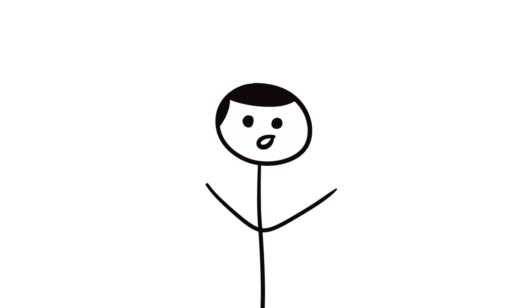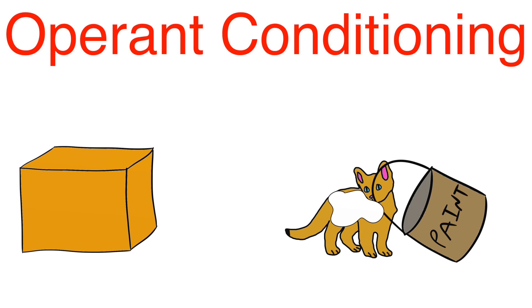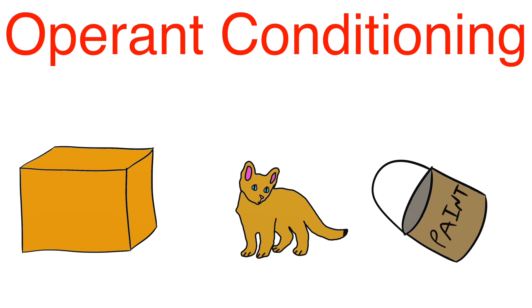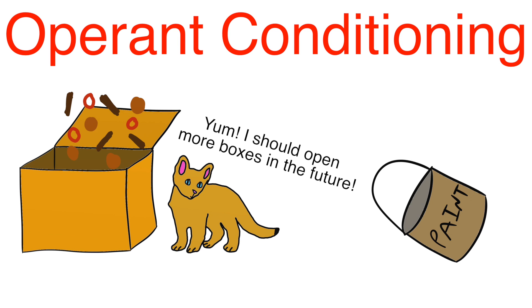To understand this further, we must look at what some researchers believe to be the underlying cause of superstitious behavior: operant conditioning. Operant conditioning is when the outcome of an organism's behavior determines whether that organism will do that behavior again in the future. Essentially, if a behavior leads to good outcomes, it will be more likely to be repeated than if it leads to bad outcomes.